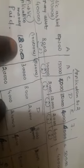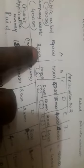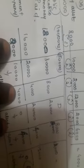Application money for A is actually 9,000 shares at 2 rupees application money. He paid 18,000, but we allotted only 8,000 shares to him. So he has to pay only 16,000; instead of 16,000 he paid 18,000, so 2,000 he paid extra.